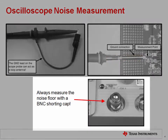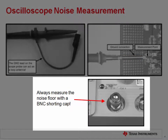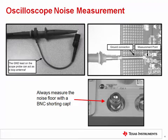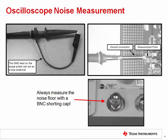It is important to always measure the noise floor of your scope. One way to do this is by using a shorting cap, as shown in the figure on the bottom right. Another method is to short the end of your scope probe or measurement cable; however, your cable or scope probe can act as an antenna. Using a shorting cap will tell you the noise floor of the scope without allowing any noise pickup on the cable. It may be useful to try both methods to determine if you are picking up noise on your cable.